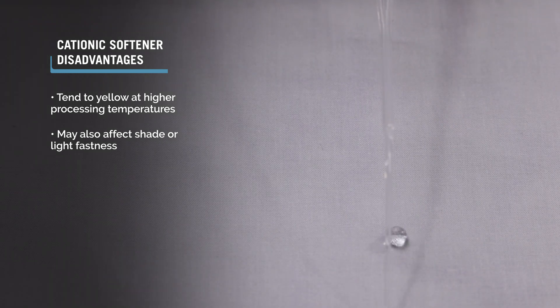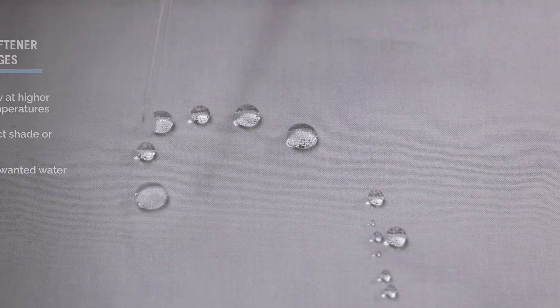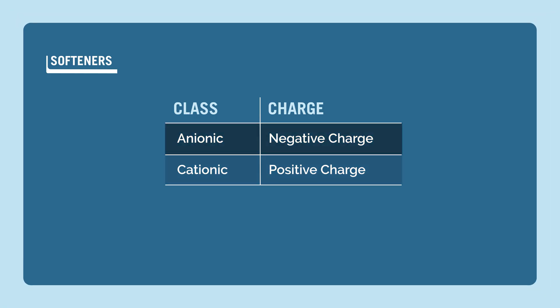Also, in some applications, cationics may cause unwanted water repellency. It is important to note that anionic and cationic chemistries are incompatible.